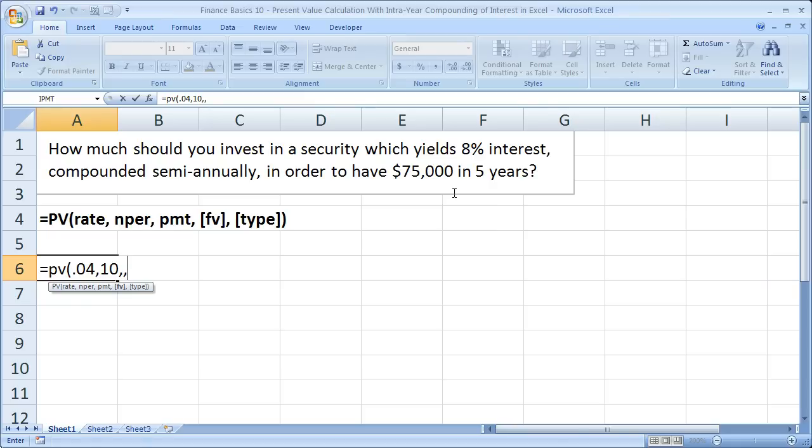Now the future value is simply going to be what we'd like to have after the 5 years or 10 periods. That would be 75,000. So I type 75, 1, 2, 3. 75,000. Go ahead and close parentheses. Hit enter.